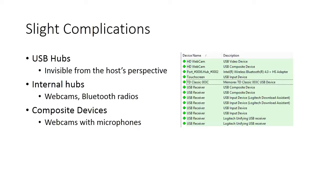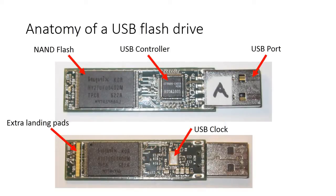Bad USB focused on attacks targeting USB sticks, which are ubiquitous, inexpensive, and as it turns out, pretty vulnerable to manipulation. Here's what a USB stick looks like without a plastic casing. USB drives contain a number of different components, but the ones important to this talk are the NAND flash, where the data is stored, and the USB controller, which must communicate between the flash memory and the computer via USB port.